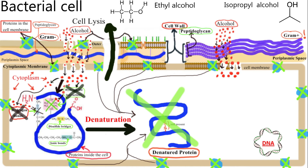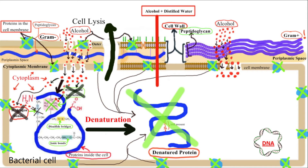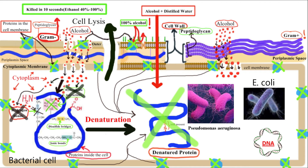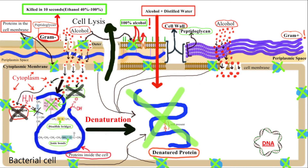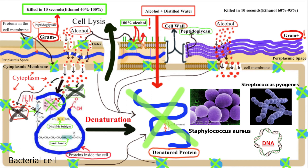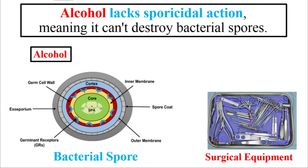Alcohols are most effective when combined with distilled water to facilitate diffusion through the cell membrane. 100% alcohol typically denatures only external membrane proteins. Gram-negative bacteria like Pseudomonas aeruginosa and E. coli are killed in 10 seconds by all concentrations of ethanol from 40% to 100%. Gram-positive organisms like Staphylococcus aureus and Streptococcus pyogenes were slightly more resistant, being killed in 10 seconds by ethyl alcohol concentrations of 60% to 95%. Isopropyl alcohol was slightly more bactericidal than ethyl alcohol. Alcohols are not recommended for sterilizing medical and surgical equipment, principally because they lack sporicidal action and can't penetrate protein-rich materials like bacterial spores.